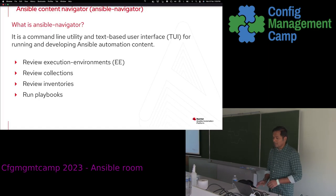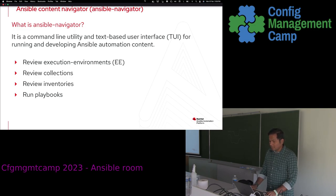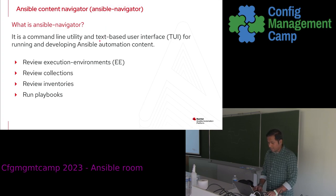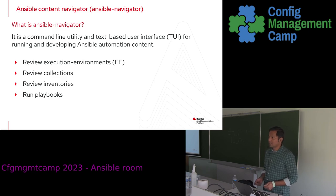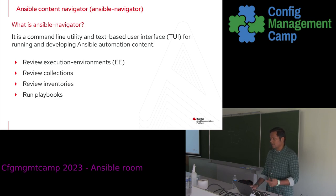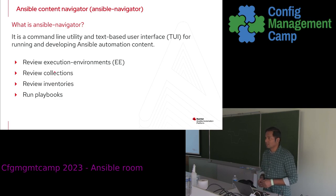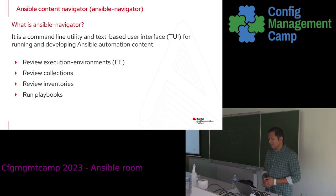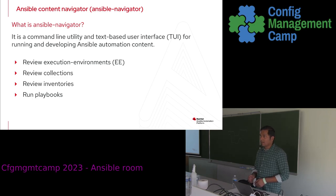Ansible Navigator is a command-line tool with two interfaces — a text-based user interface and a standard CLI — used for running and developing Ansible automation content. It is used to review execution environments; when we made the shift towards execution environments, there was no tool to tell you what the contents of the execution environment were or what plugins were part of the EE. Ansible Navigator was developed to solve that problem. You can also review collections installed on your local system or in your execution environments, review inventories, and run playbooks.